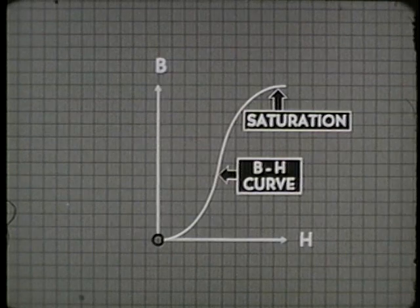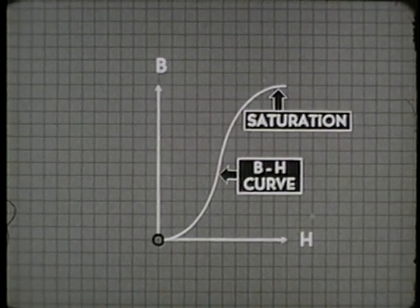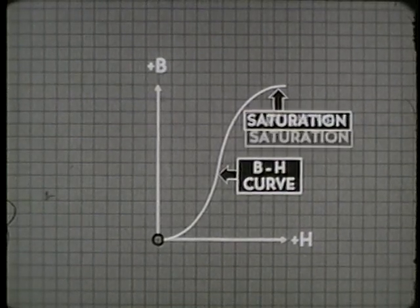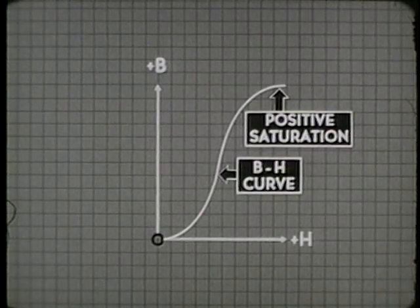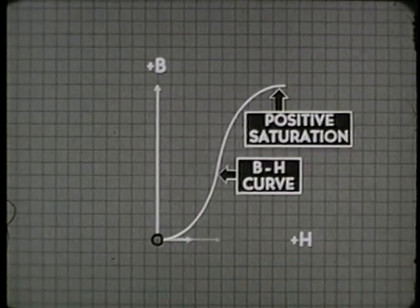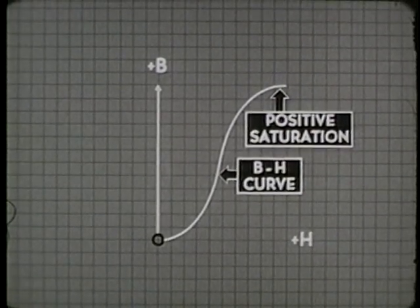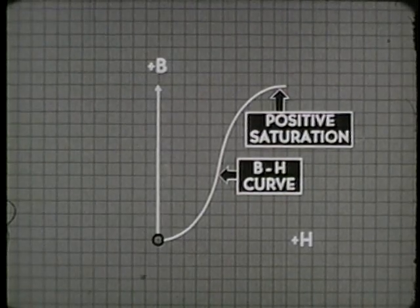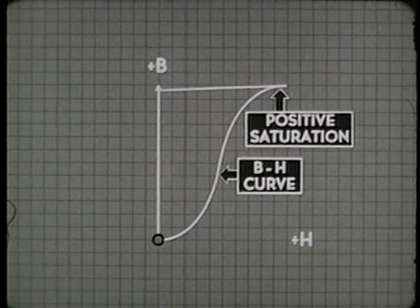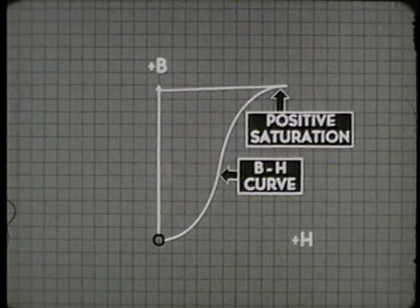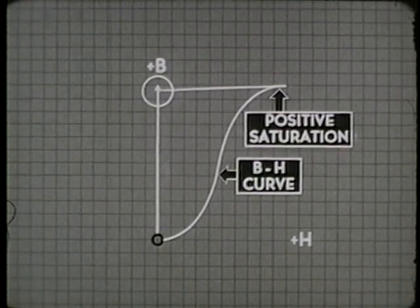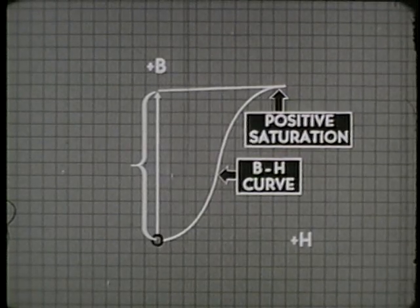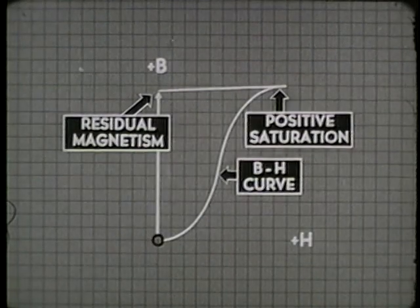This is the point of saturation — the core is holding just about all the magnetism it can hold. We've been applying a positive magnetizing force, which produced a positive flux density and brought the core to a state of positive saturation. If we now reduce or stop the magnetizing force, for all practical purposes there is no change — the core material retains most of its magnetism. The BH curve is brought back to the zero line on the horizontal scale, but the flux density on the vertical scale remains near plus B. This amount is known as the residual magnetism of the core material — the magnetism that remains after the force that brought it about is removed.